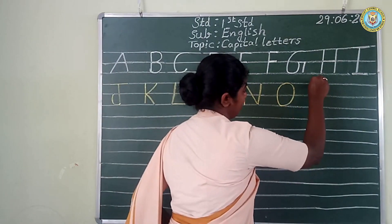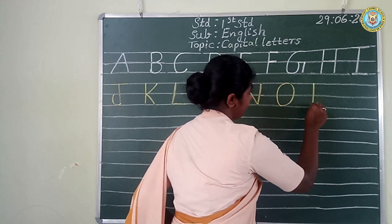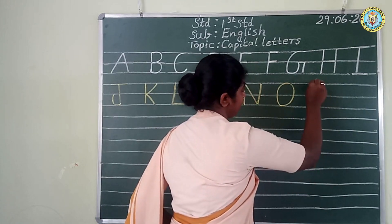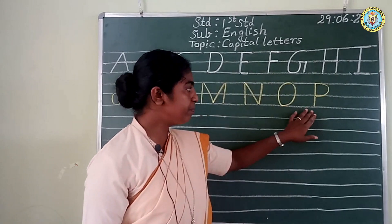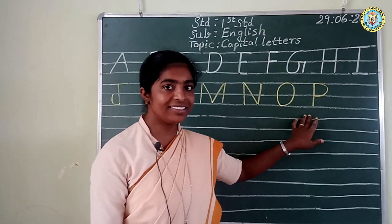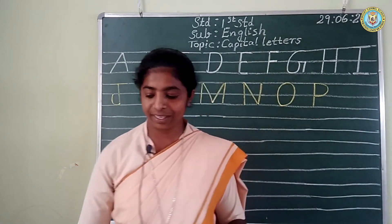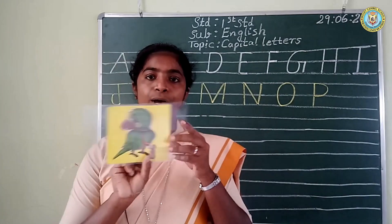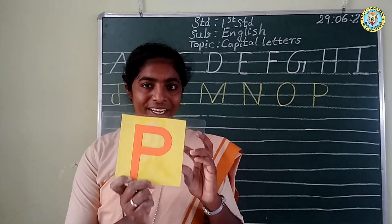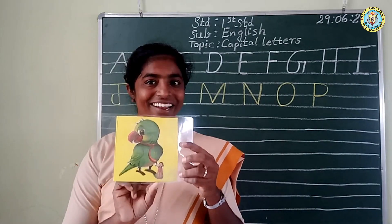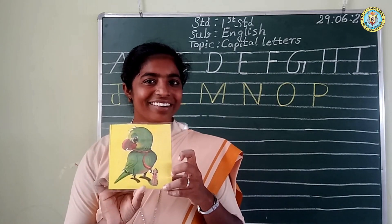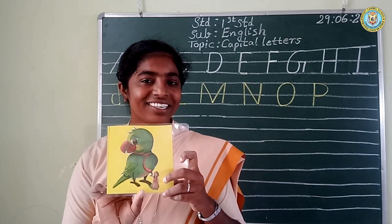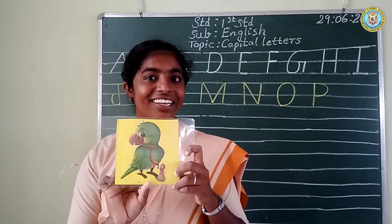Which is the next letter? P. The straight line and the curve. It is P. P for parrot. P for parrot. Yes, it is green in color.